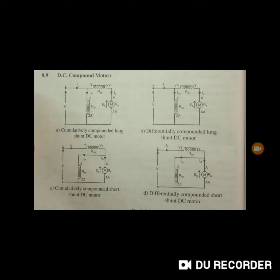In the DC compound, it's again divided into two types: cumulative and differential compound. Cumulative means if the flux generated by series winding as well as the shunt windings are in the same direction, then it's called a cumulative compound motor. If the flux generated by series winding and shunt winding is not in the same direction, then it's called a differentially compound DC motor.